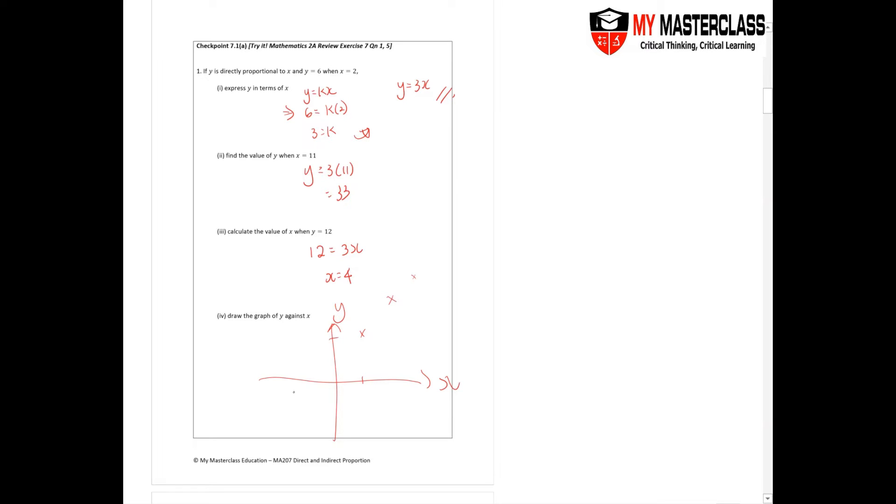You realize that this keeps going upwards. So when X equals to 0, Y is 0 as well. So what does this tell you? It tells you that the curve cuts at the 0, 0 axis.